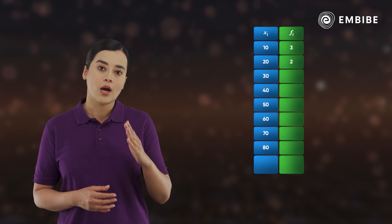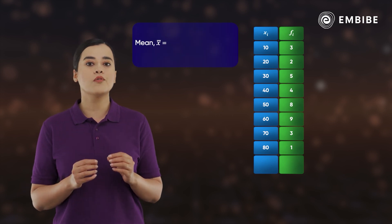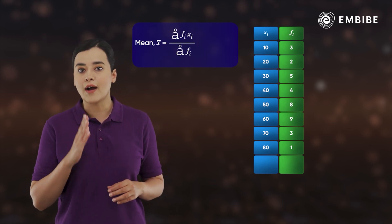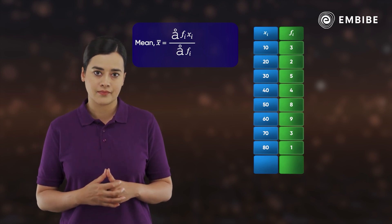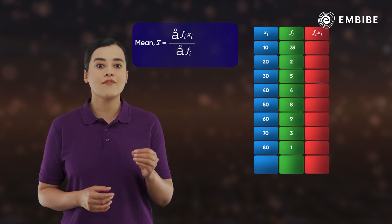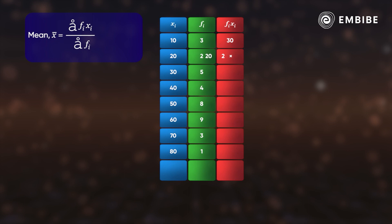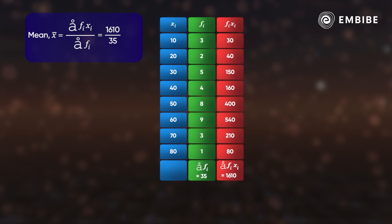Let us start with finding the mean. If we have a discrete data set with observations x₁, x₂, up to xₙ with frequencies f₁, f₂, up to fₙ respectively, then the mean is the sum of the products of fᵢ and xᵢ divided by the sum of the frequencies. For this discrete frequency distribution, the fᵢxᵢ values can be calculated. Their sum is 1610 and the sum of fᵢ's is 35, so the mean is 1610 ÷ 35, that is 46.